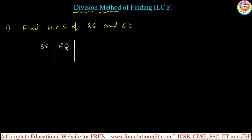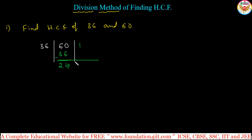In the 36 table, find how many times 36 goes into 60. 36 times 1 is 36; 36 times 2 is more than 60. So 36 into 1 is 36. Now subtract: 60 minus 36 gives a remainder of 24.